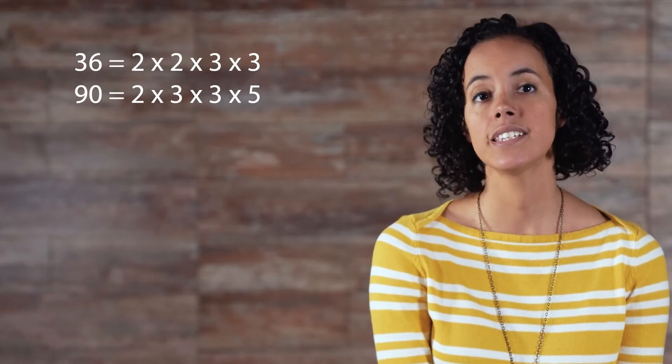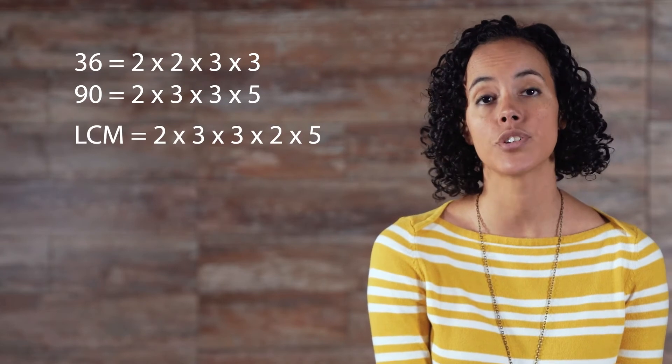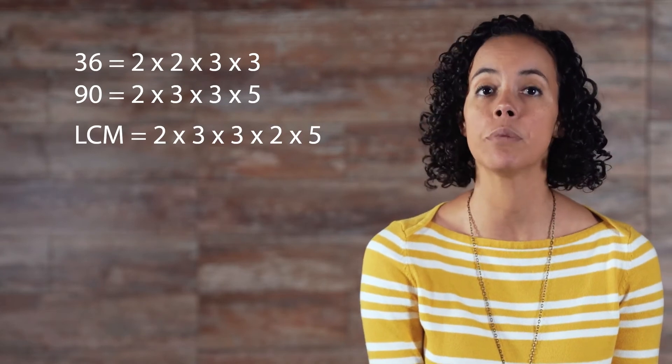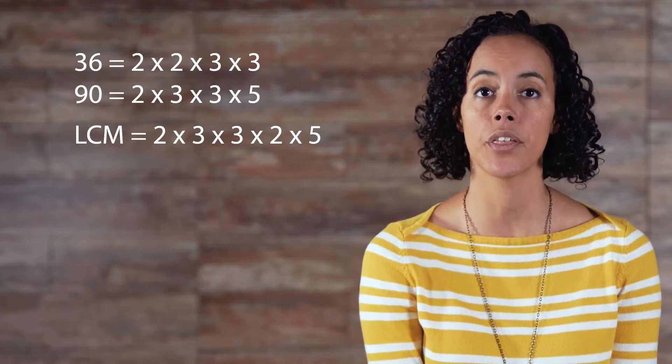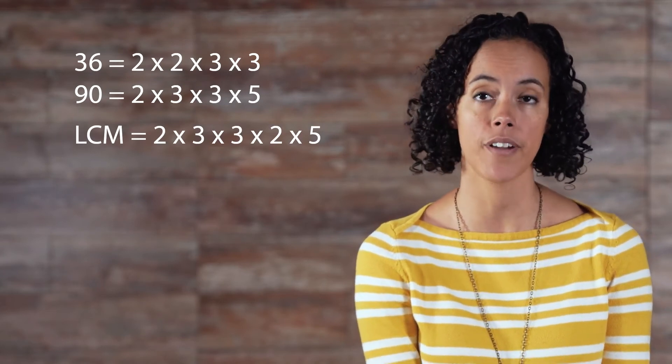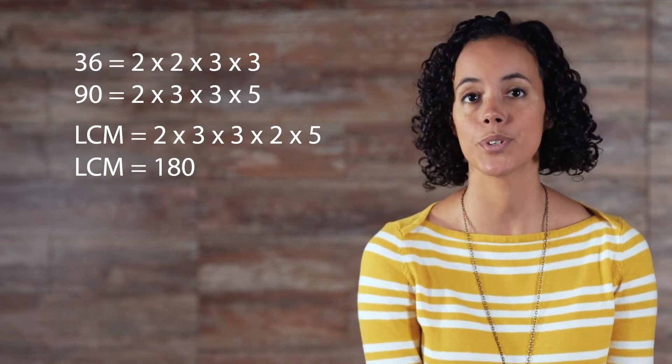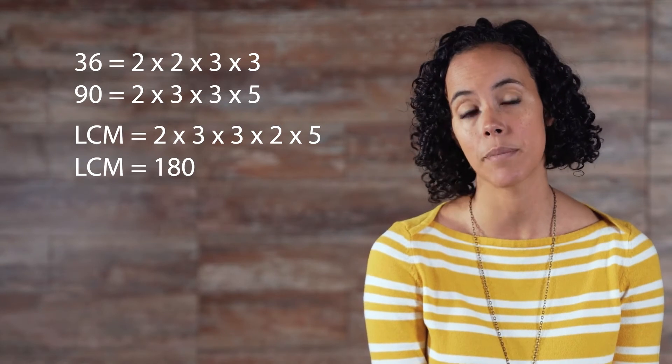Another common method involves the prime factorization of each value. Remember, a prime number is only divisible by 1 and itself. Once the prime factors are determined, list the shared factors once, and then multiply them by the other remaining prime factors. The result is the least common multiple.